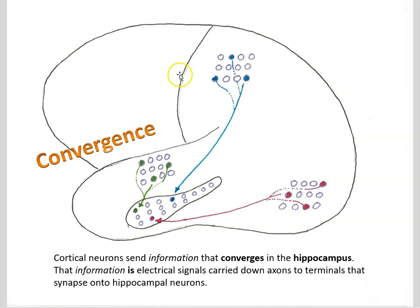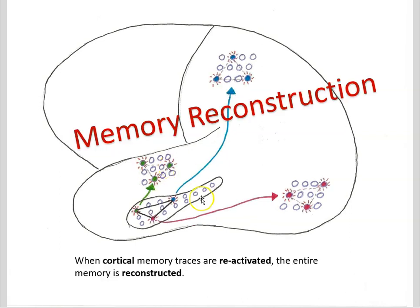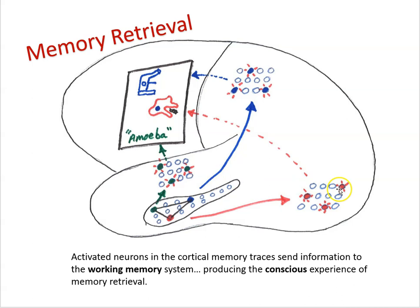When we learn, the flow is from the cortex to the hippocampus; when we're retrieving, the flow is in the opposite direction — the hippocampal memory trace is used to reactivate the cortical memory traces. When the cortical memory traces are activated, they send information up into the working memory system, and this is when we experience the retrieval of the memory.